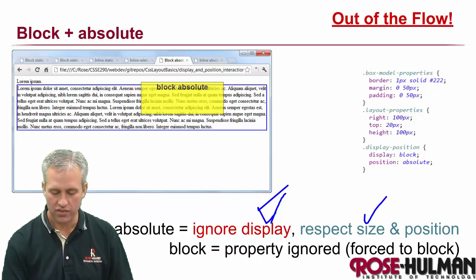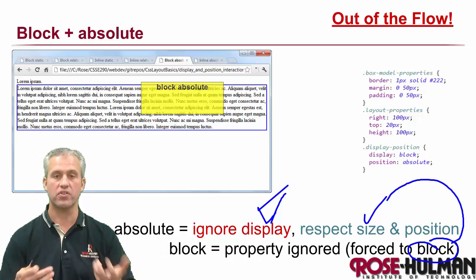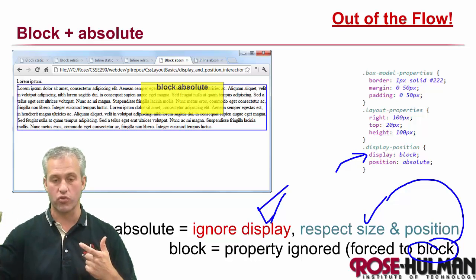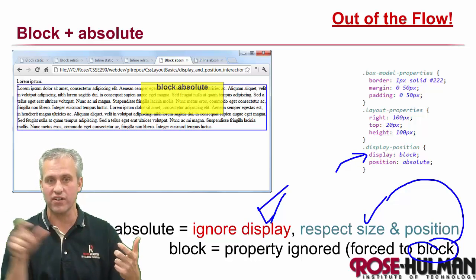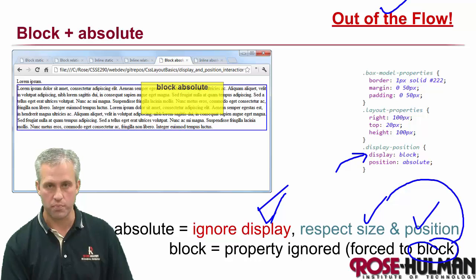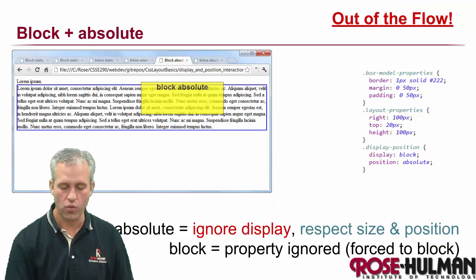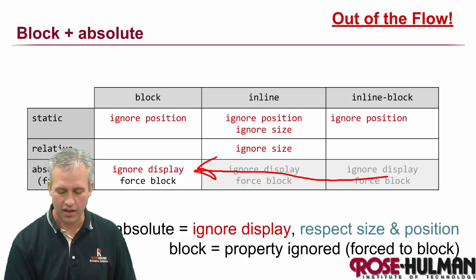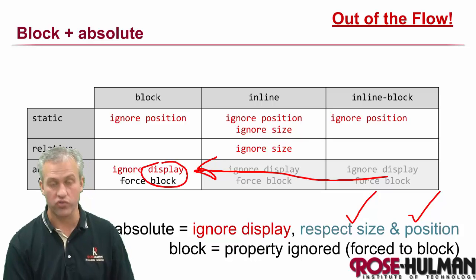So the important thing to note here is that it completely ignored the display property is how this works, right? So it respects size because it gets forced to block, right? So no matter what you set the display to, it essentially interprets it as block. Now note that if you were to set it to something other than block, it would still be set to that. It's just when Chrome goes to render it, it just never looks, right? It just uses block. So it's kind of confusing that you can set it to something different. It's just not used. It's just completely ignored. And this is out of the flow, but it does respect these things. And if it ignores display, we really don't have to look at all the combinations for display.